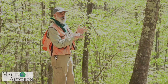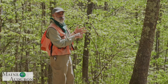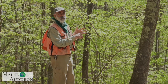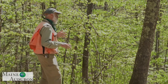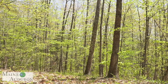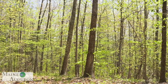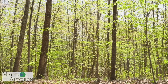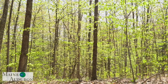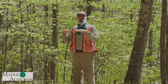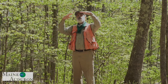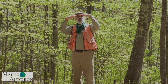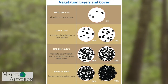Moving up from the riparian area, we have the understory, which is the first six feet from the ground up. If you look here, you'll see we have some sapling trees in that zero to six foot range. When we assess this, we look at how much vegetation is in that layer. There's a term called closure — if you were to stand there and look up, how much of what you saw would be covered by leaf material. In this case there wouldn't be a lot, but there's some.